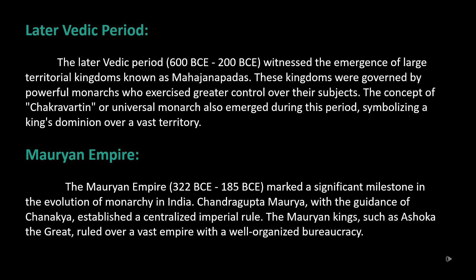The Mauryan Empire (322 BCE–185 BCE) marked a significant milestone in the evolution of monarchy in India. Chandragupta Maurya, with the guidance of Chanakya, established a centralized imperial rule. Mauryan kings such as Ashoka the Great ruled over a vast empire with a well-organized bureaucracy.